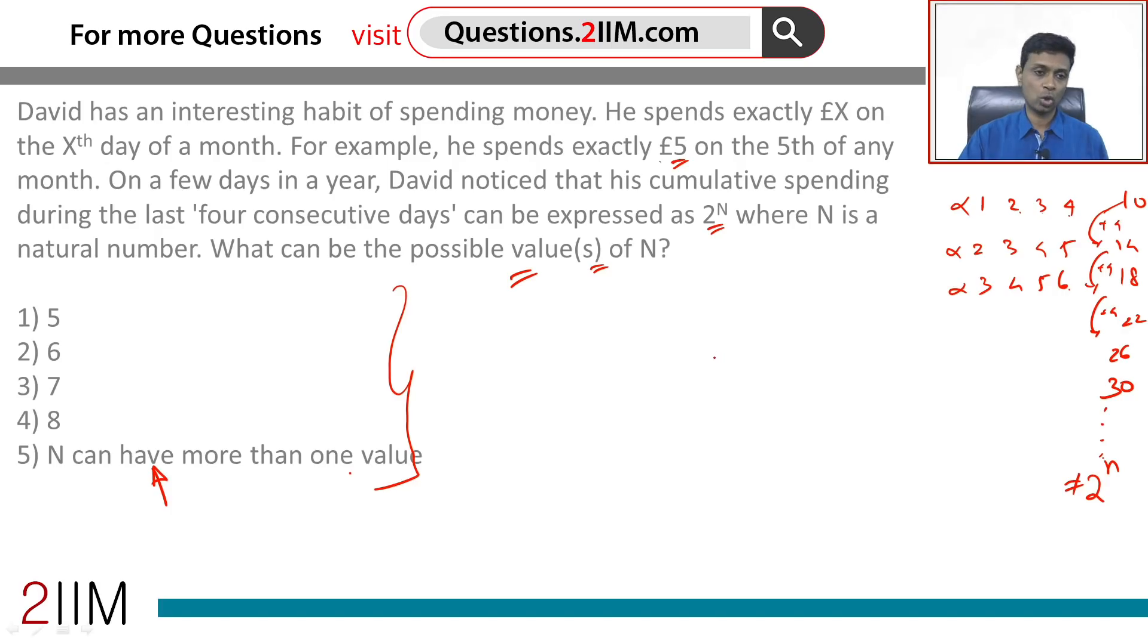We're missing the point that we are thinking about an entire month. The dates go in a cycle. Once you hit 28, 29, 30, 31, you don't go to 32—you go back to 1. This could completely change the dynamic of what we are looking at here.